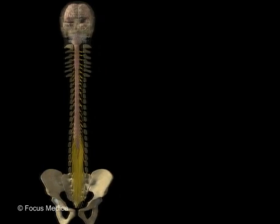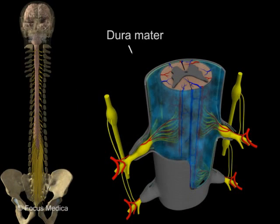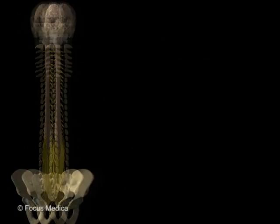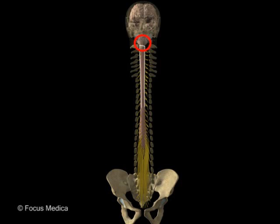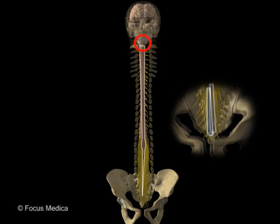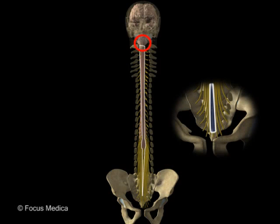The dura mater is the outermost covering of the spinal cord. It extends from the foramen magnum to the S2 vertebra, where it blends with the filum terminale of the spinal cord.